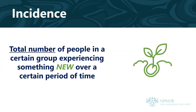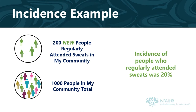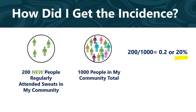Incidence is the total number of people in a certain group experiencing something new over a certain period of time. For example, in my community, 200 new people regularly attended ceremonial sweats in 2018. My community had 1,000 members in 2018. That means that the incidence of people from my community who regularly attended ceremonial sweats in 2018 was 20%. I divided 200 new attendees by 1,000 community members, which equals 0.2 or 20%.